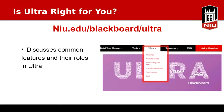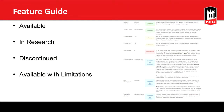Part of our webpage at niu.edu/blackboard/ultra has an overview that discusses common features and their roles and how they've adapted in the Ultra view — a great starting point with common questions already answered. We also have a feature guide, which is a case-by-case comparison showing whether a feature is available, in research, discontinued, or available with limitations.